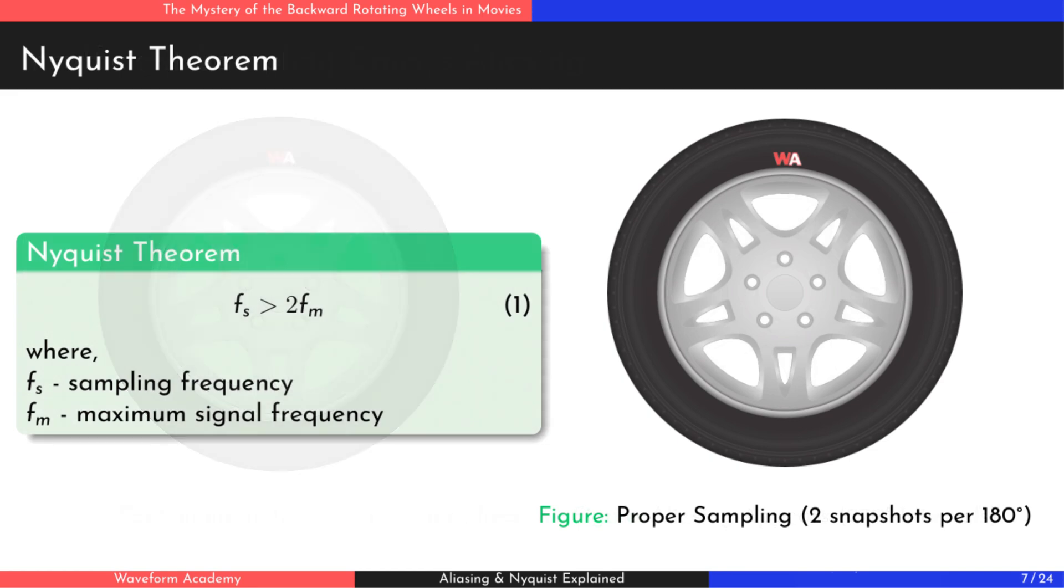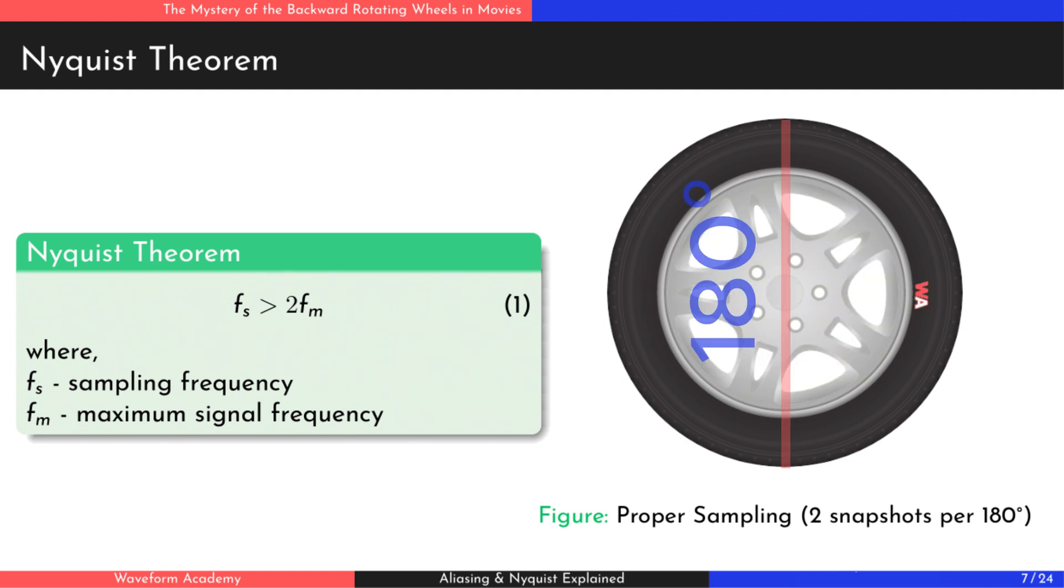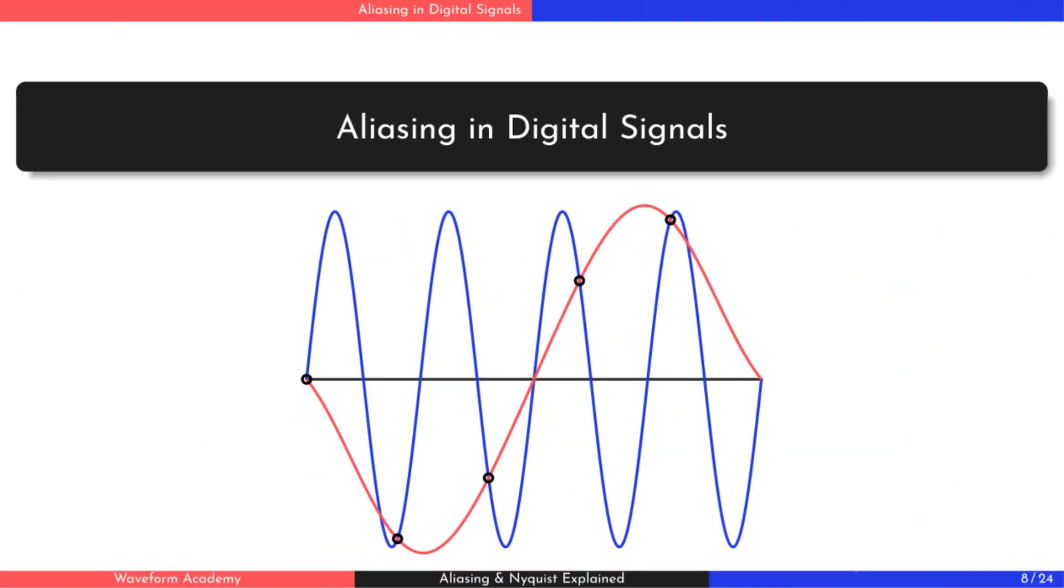And this brings us to the Nyquist theorem. After seeing this example, it's easy to understand that if we capture at least two snapshots of the wheel's 180-degree rotation, essentially covering half the wheel, we could clearly determine the direction of rotation. This is exactly what the Nyquist theorem tells us. It states that to accurately reconstruct a continuous analog signal from its sampled version, the sampling rate must be at least twice the highest frequency present in the signal. If this concept still seems a bit abstract, let's examine it in the context of digital signal sampling.